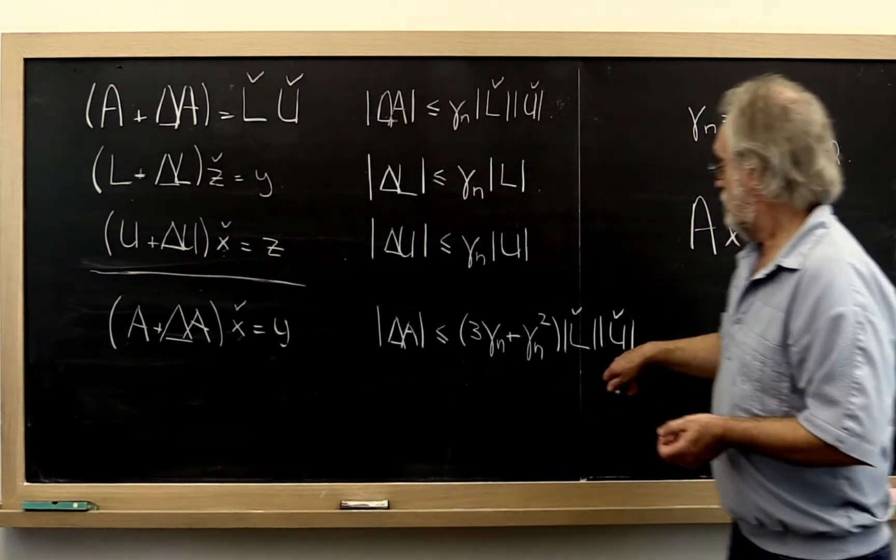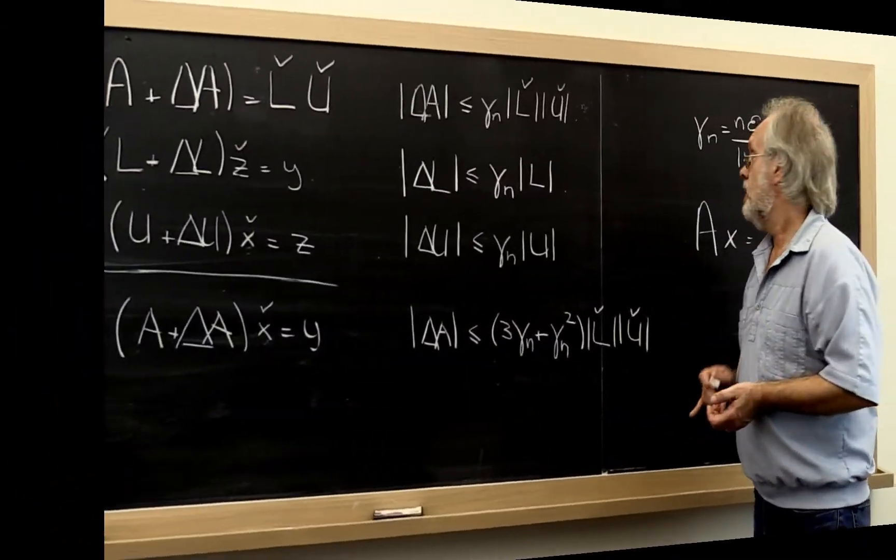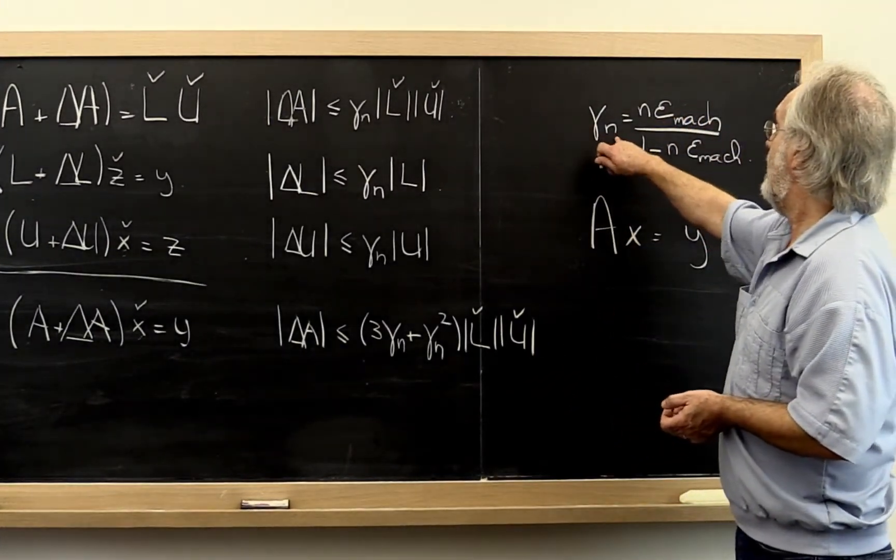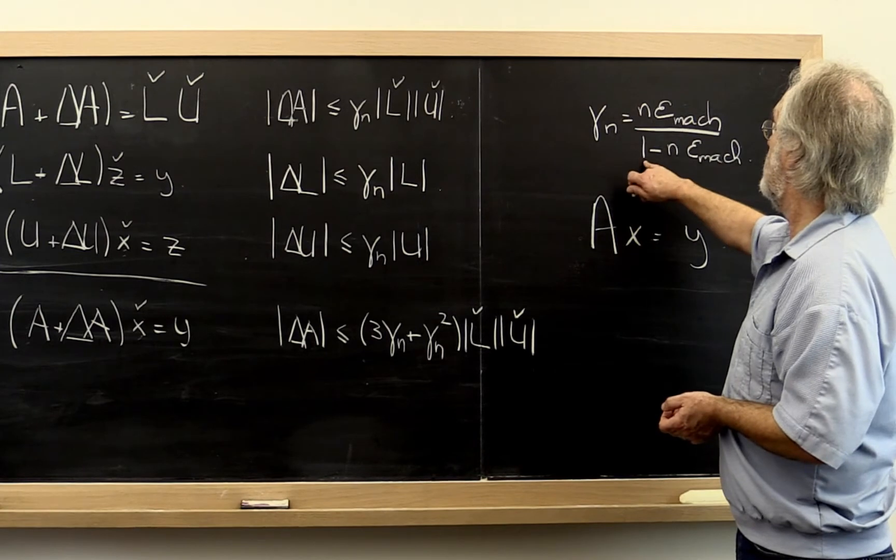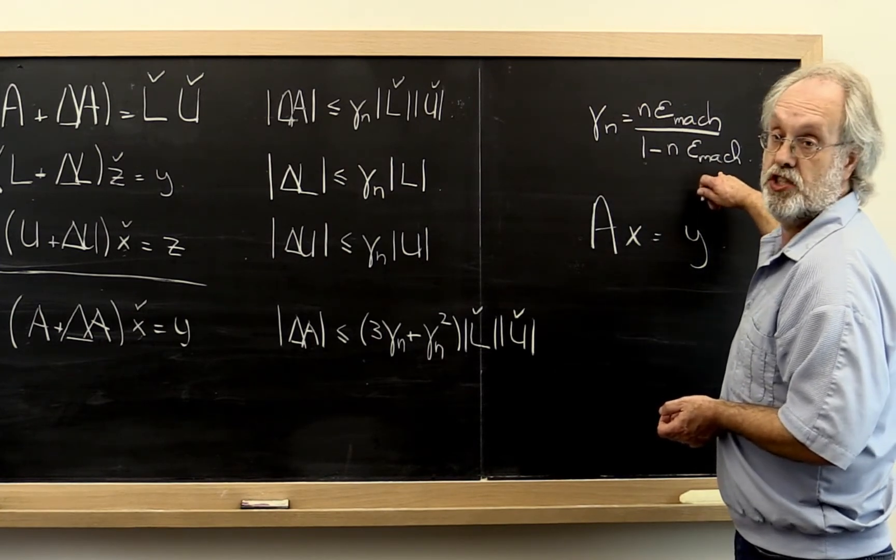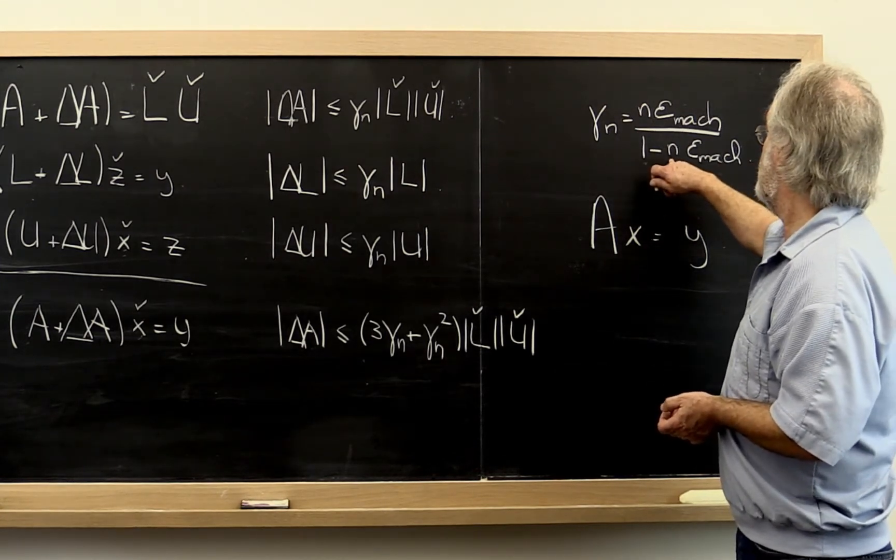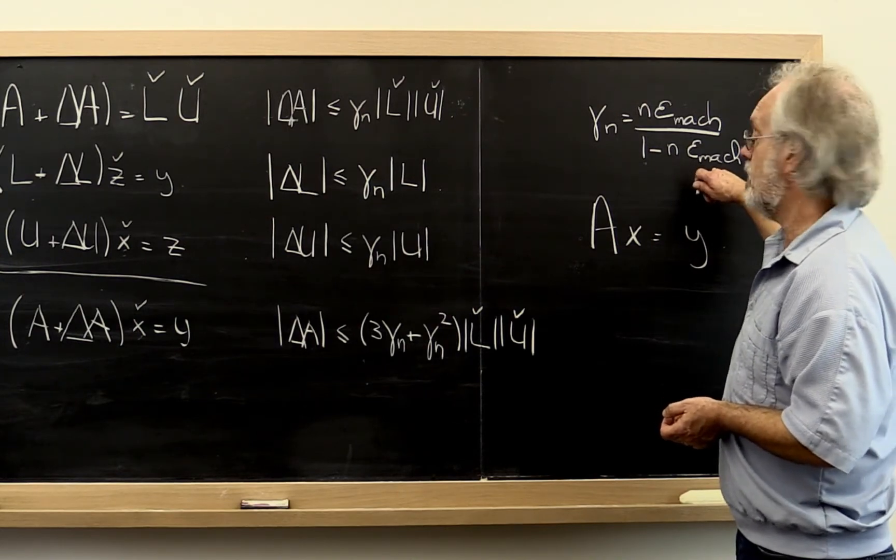So this is the magic formula. And if you recall that gamma n equals n times the machine epsilon divided by 1 minus n times the machine epsilon, where it's assumed that n is much smaller than 1 divided by the machine epsilon.